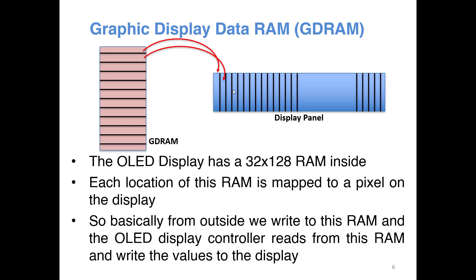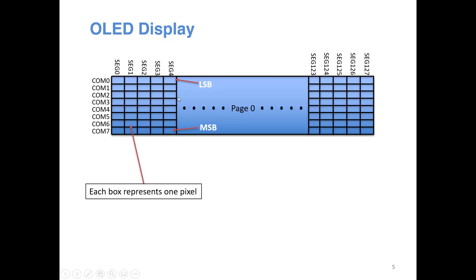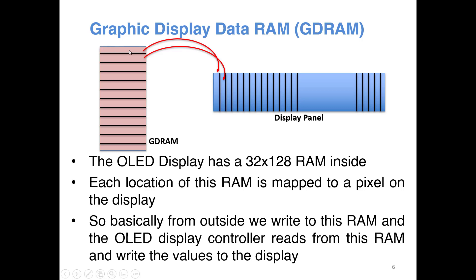If you want to display something using the OLED, first you write that data to the GDDRAM and the display will take the data from the GDDRAM and display it on the OLED panel. This is a monochrome OLED, meaning you can see either black or white. If you make a bit high you will see it as white; if you make a bit 0 you will see it as black. Based on what data you write, you will see the corresponding display.